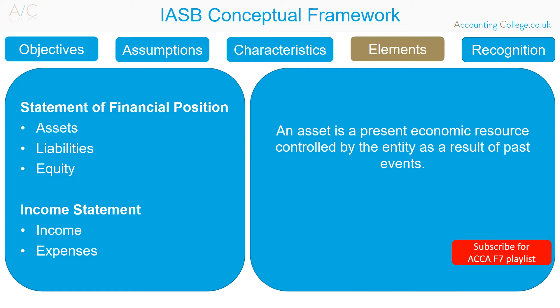Assets: An asset is a present economic resource controlled by the entity as a result of past events. For example, the inventory held by an organisation for trading purposes — this is a resource controlled by an organisation in that the organisation has the power to restrict other people's use, as a result of past events, as the inventory was purchased in the past. Assets are presented as either non-current or current assets. Non-current assets are kept long term in the business, for example equipment, premises and motor vehicles. Current assets are cash items or items that will become cash within 12 months, for example inventory, receivables or cash.